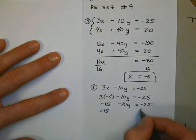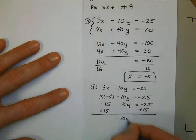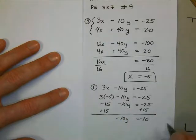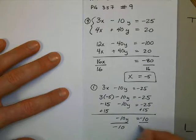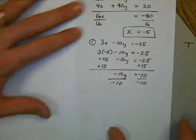I'm going to add 15 to both sides. That leaves me with negative 10y equals negative 10. I divide both sides by negative 10. That leaves me with a final value of y equals 1.